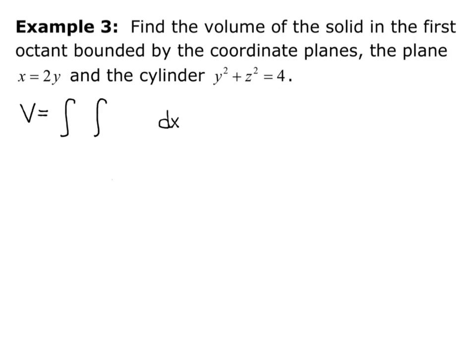So now that we have our bounds, we can set up our integral. We know that x goes from 0 to 2y, and we know that y goes from 0 to 2. So we have a double integral, 0 to 2, and then 0 to 2y, of whatever our function is, f of x, y, dx, dy.